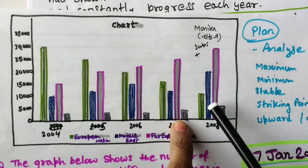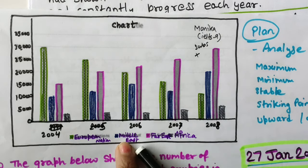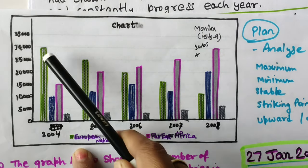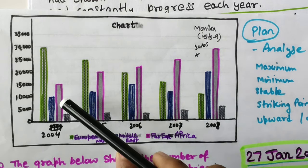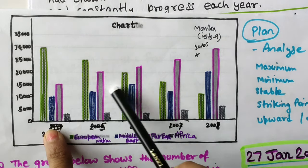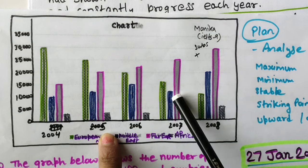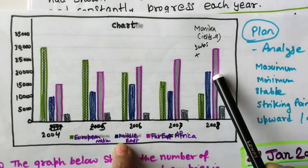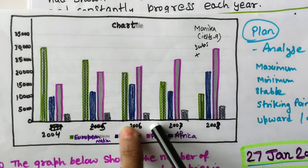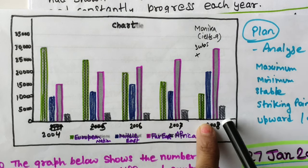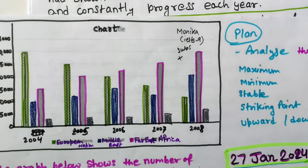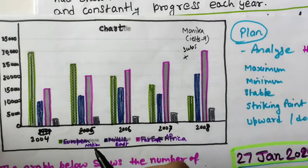Africa shows some stability initially, then is also on an upward trend but with less growth compared to Middle East and Far East. To summarize: European nations show a clear downward trend; Far East shows a clear upward trend; Middle East follows an upward trend with little fluctuations; and African students grew with stability but not as much as the others.